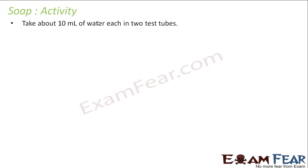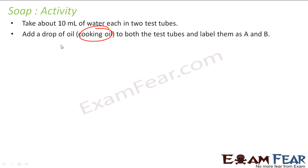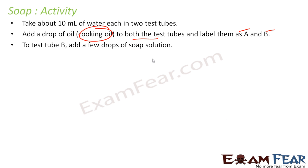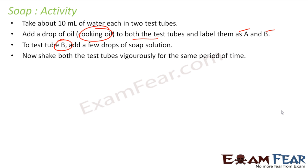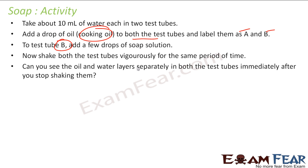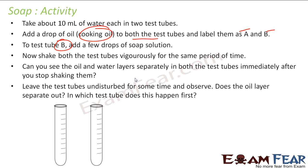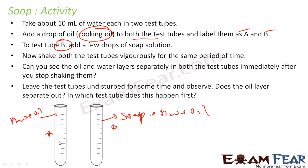We have an activity for soap. Take 10 ml of water in two test tubes, then drop cooking oil into both test tubes. Label them A and B. Add a few drops of soap to B. Shake them — you see the layers separate when you shake. But if you keep it undisturbed for some time, in test tube A (water plus oil only), the oil layer is again on top — it is not mixed. But in test tube B (soap plus water plus oil), soap has formed a lather and the oil is all dissolved in the lather.